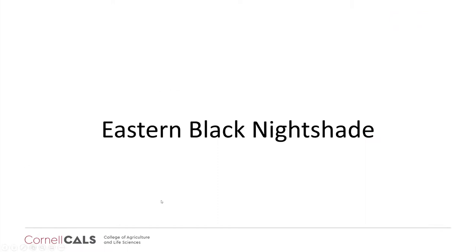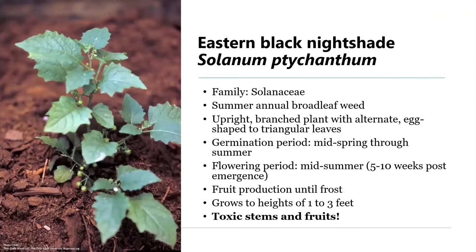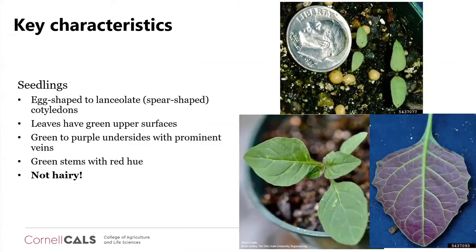Eastern black nightshade, also called Solanum ptycanthum, is another solanaceous weed in the tomato family. It is another summer annual broadleaf weed with an upright growth habit, branched with alternate egg-shaped to triangular leaves. It germinates from mid-spring through summer and typically flowers in mid-summer, about five to ten weeks post-emergence. It will produce fruit until frost, and like hairy nightshade, it grows about one to three feet in height. It is toxic — its fruits and stems are toxic to animals.